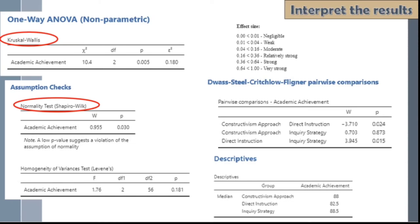When it comes to interpretation of results, these are the parts that you need to pay attention to. It should be clear that the reason we use the Kruskal-Wallis H-Test is because of the violation in the assumption for the test of normality, wherein the p-value obtained is less than 0.05. You must obtain a value greater than 0.05 to meet this assumption. Although the assumption for homogeneity of variance is met, it violates the assumption for normality. So instead of one-way ANOVA, Kruskal-Wallis H-Test was used.